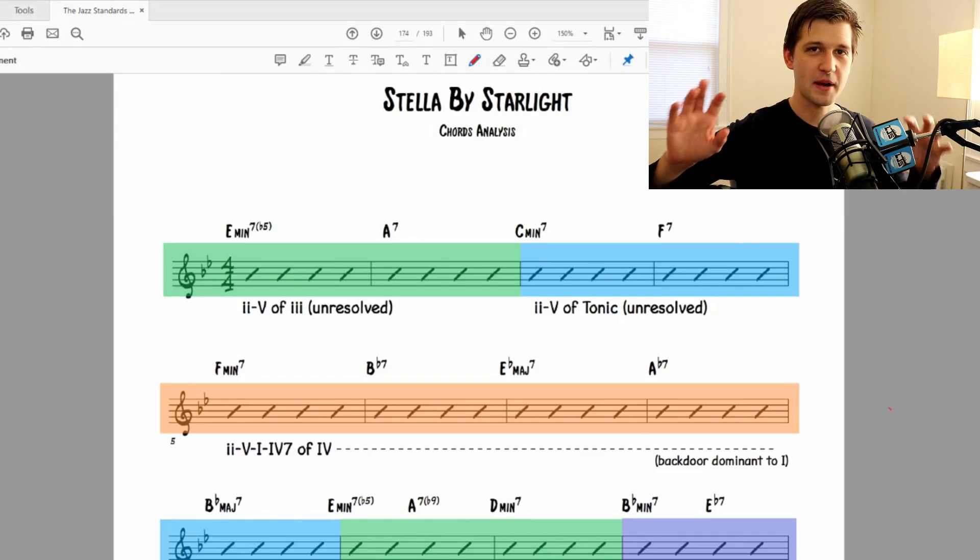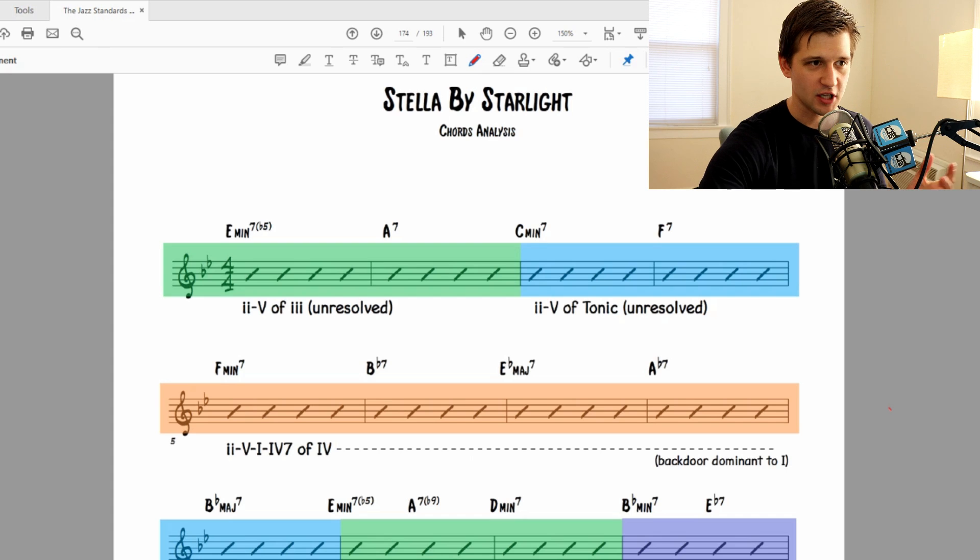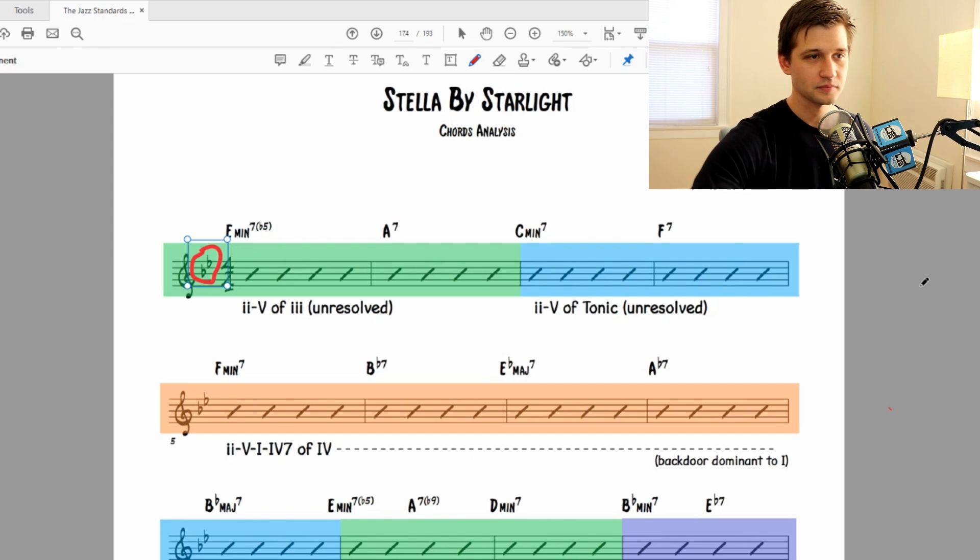So without further ado, let's jump into this presentation and let's walk through Stella by Starlight. All right, so I'm here behind my computer looking at the Stella by Starlight chords analysis. So we're going to be looking at this two different ways. First, we're going to try to take all the chord progressions and chords in this song and try to relate them back to the parent key center. Now in the case of Stella by Starlight, I'm going to circle it right here. Parent key center, two flats, that is B flat major.